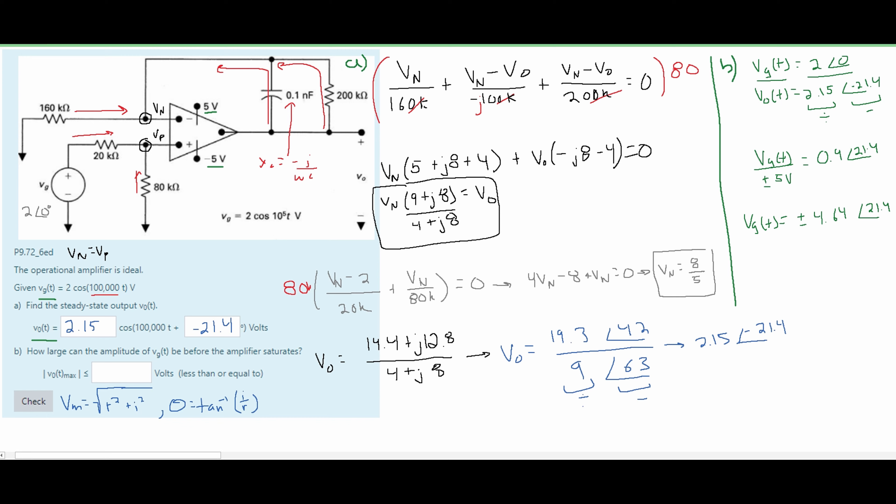And if we do this we are going to get a plus minus 4.64 with an angle of 21.4 degrees. And so our Vmax for this equation is going to be this plus or minus 4.64. Well it's asking us for how large it can be. So it's going to be a plus 4.64 and that will be the answer to our part B.